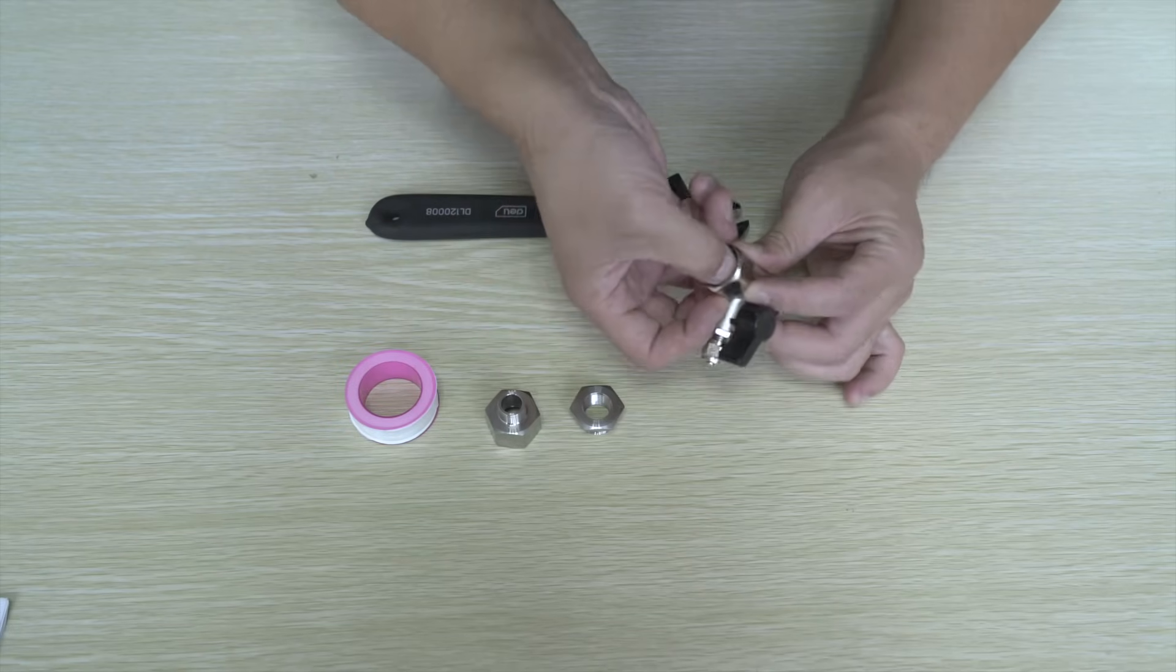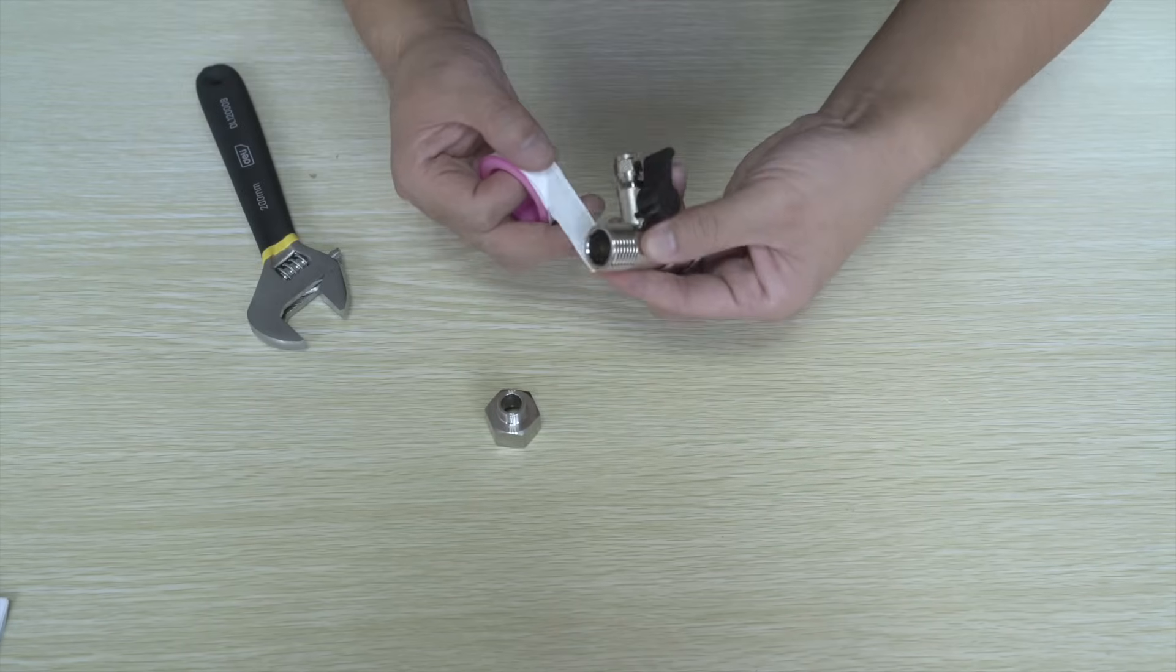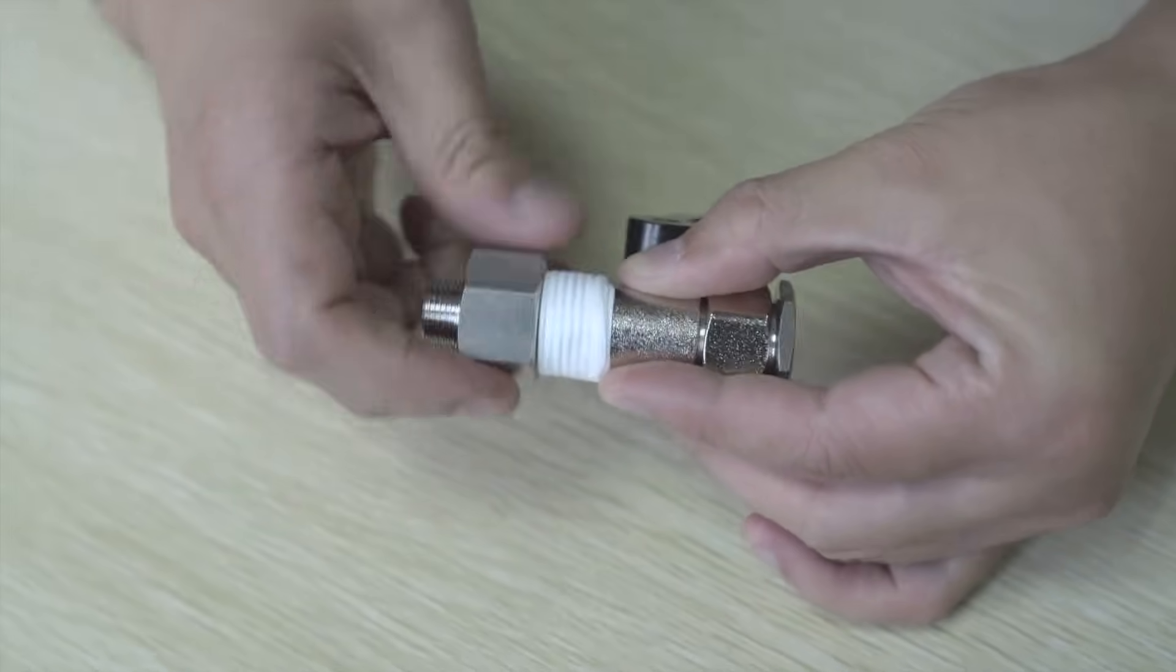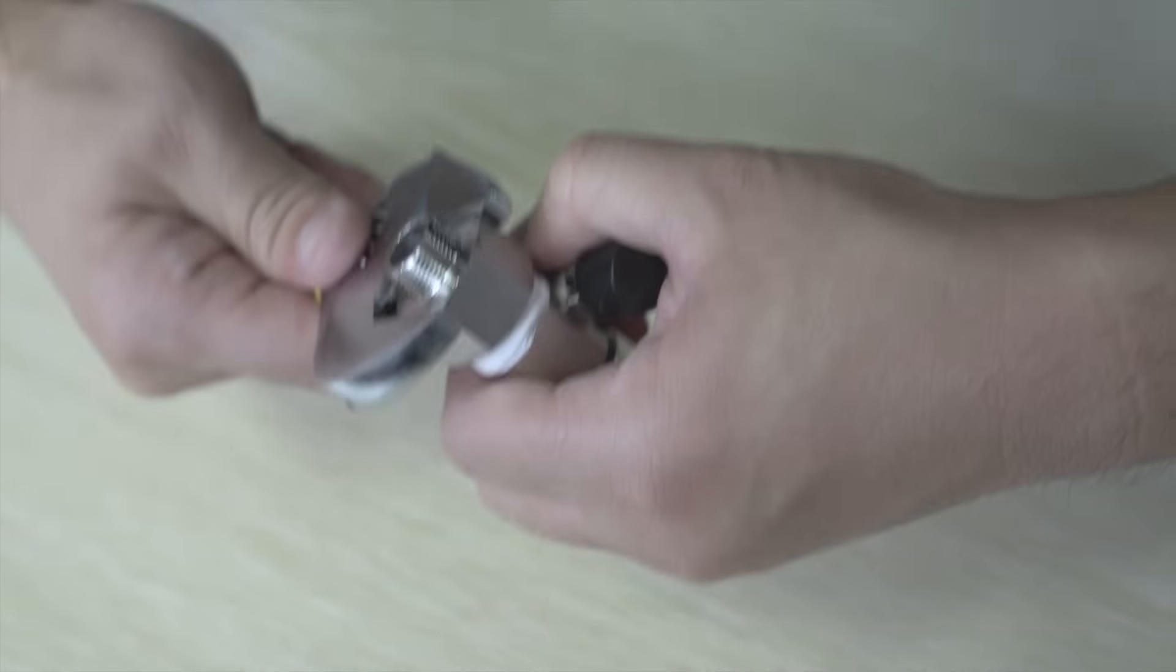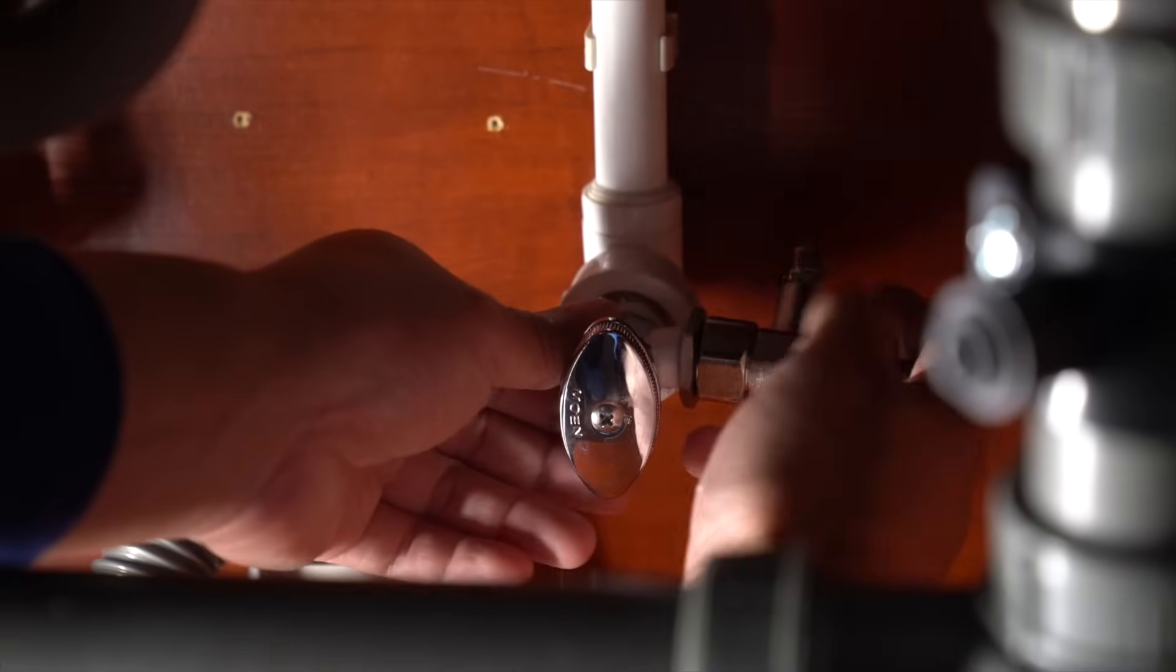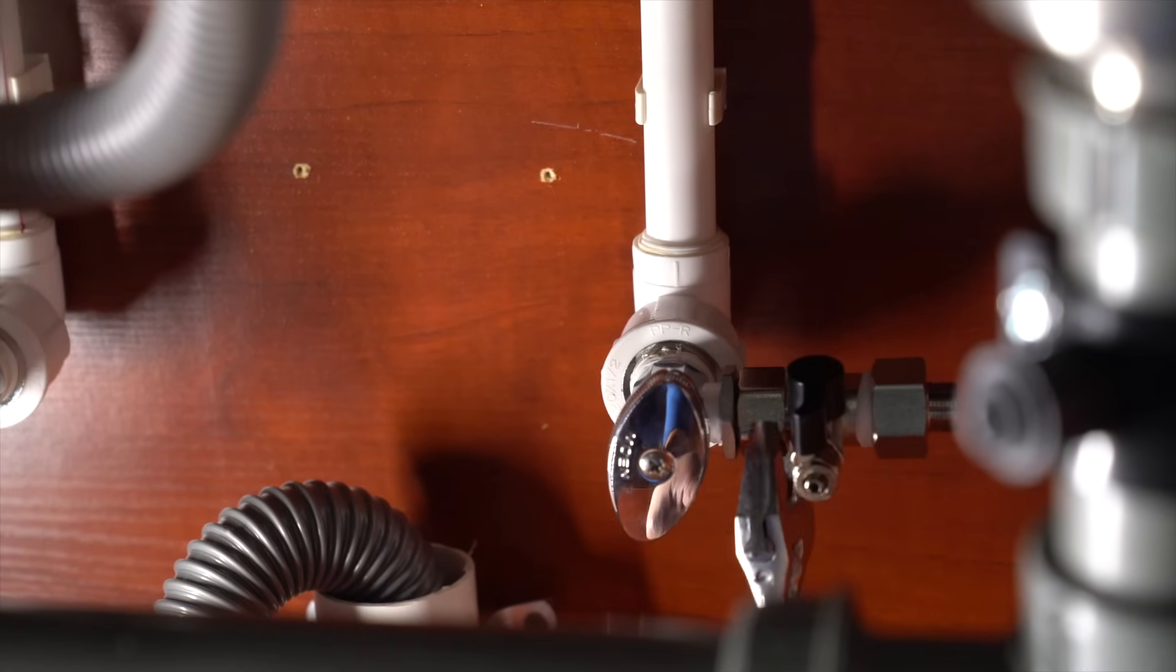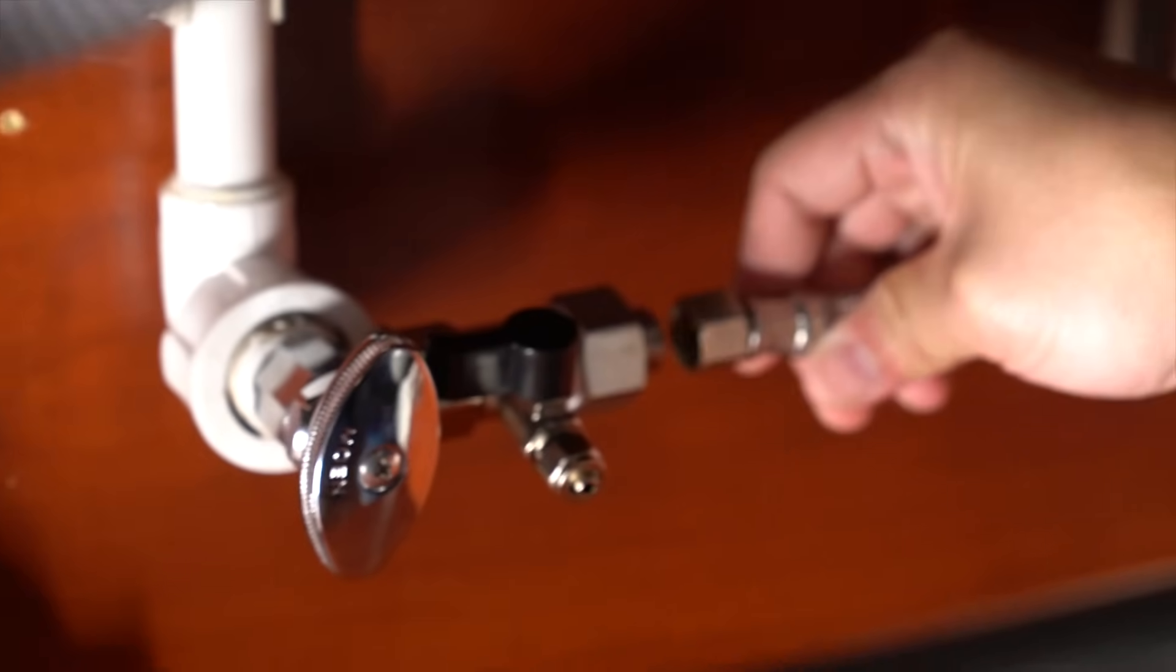Now prepare your feed water adapter valve. Apply the Teflon tape in a clockwise direction for 10 turns around the male side of its half-inch NPT thread. Connect the two 3 1/8-inch compression threads on both sides of the valve. Now apply Teflon tape around the male threaded outlet of the cold water valve. Connect the feed water adapter valve and tighten with a wrench. Now connect the existing tubing and tighten.